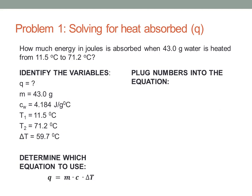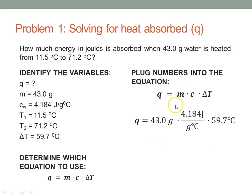Now we plug the numbers into the equation: Q equals M times C times delta T. We're solving for Q, so we don't need to rearrange. Plugging in 43.0 grams times the specific heat capacity times delta T. Always check your units — grams cancels with grams, degrees C cancels with degrees C, and we're left with joules. Plugging into the calculator, we get 10,740.7464 joules.